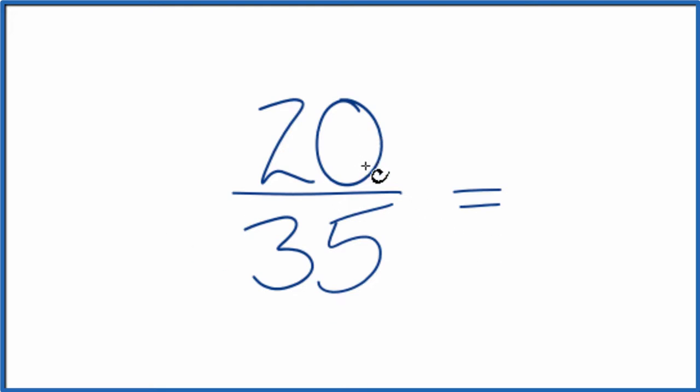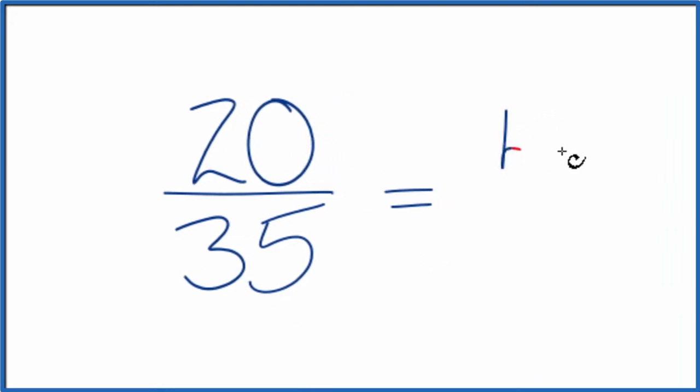So let's try that: 20 divided by 5 gives us 4, and 35 divided by 5 gives us 7. So we end up with simplifying the fraction 20/35 down to 4/7, and we can't reduce this any further.